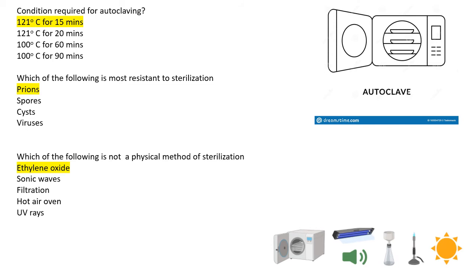Next: which of the following is most resistant to sterilization? Options are prions, spores, cysts, or viruses. The correct option is prions, as they are most resistant to sterilization.